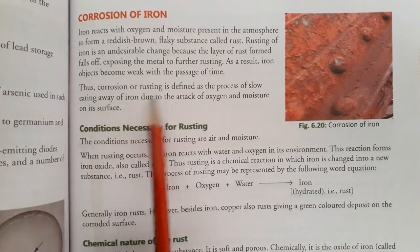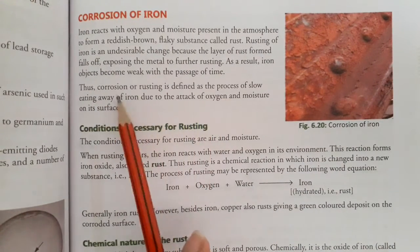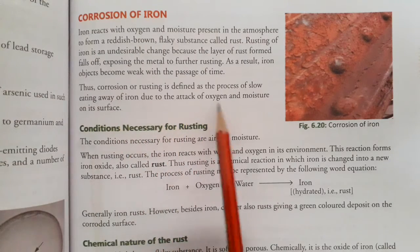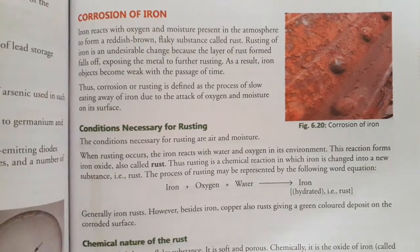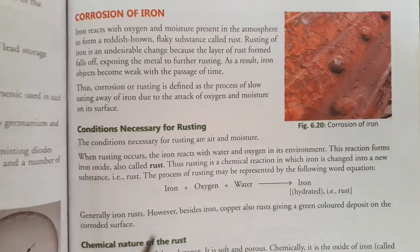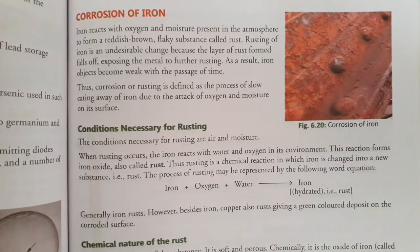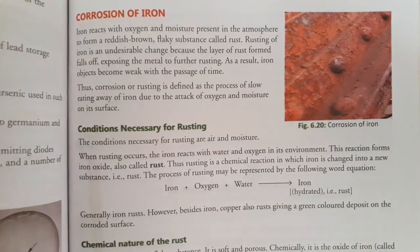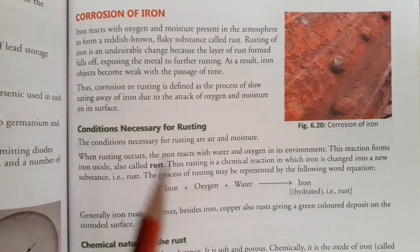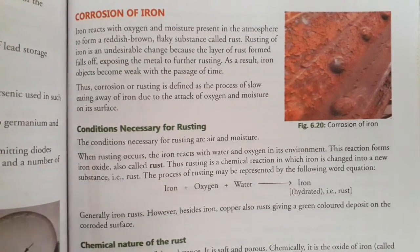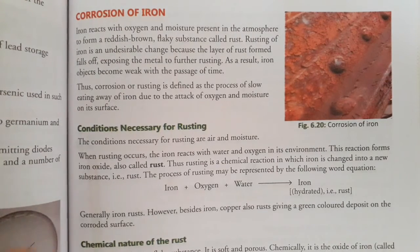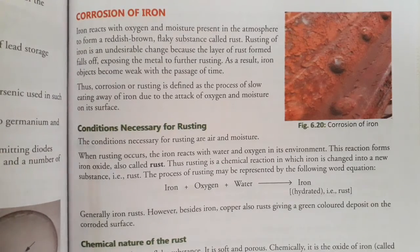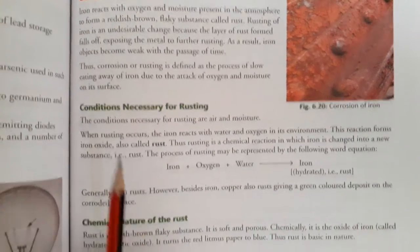Thus, corrosion or rusting is defined as a process of slow eating away of iron due to the attack of oxygen and moisture on its surface. If we define it properly, it means the slow eating away of iron — slowly, slowly. In this slow process, iron is finished because oxygen and moisture attack its surface.